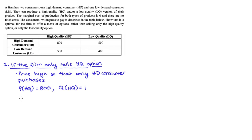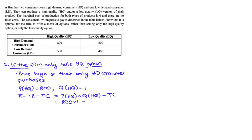The quantity sold would be one, because that price of $800 is too high for the low demand consumer who would pay at most $500 for that option. Profit equals total revenue minus total cost: price times quantity is 800 × 1, and total cost is zero since marginal cost is zero with no fixed costs. So profit = $800.